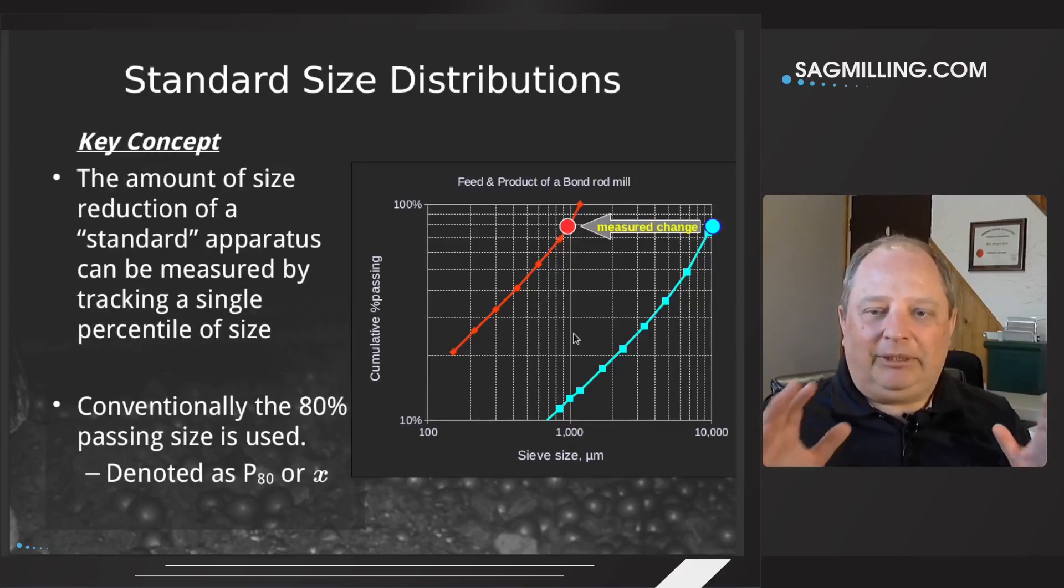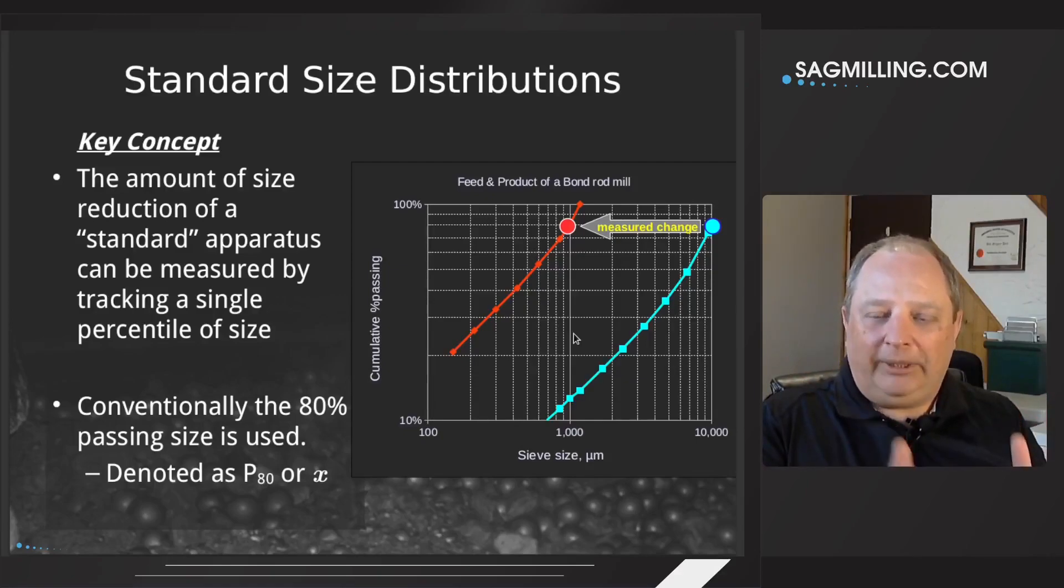So a key concept with the standard size distributions with classical grinding equipment, you can track the amount of breakage that is occurring in the machine by just following that one size, the 80% passing size. So we will normally use the term P80 in a lot of the literature that you see. But for the moment, I'm going to take a little deviation here and I'm going to use the term X to describe the particle size when we deal with the equations.